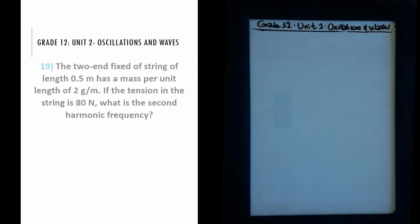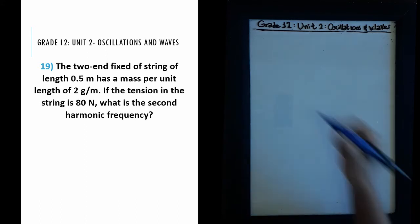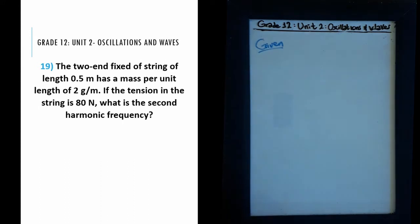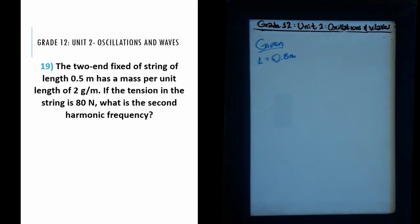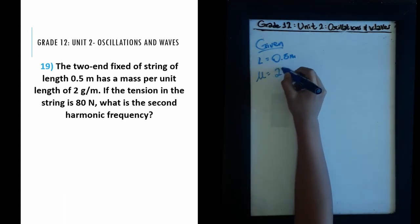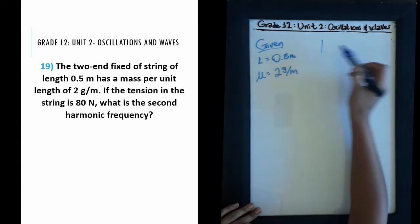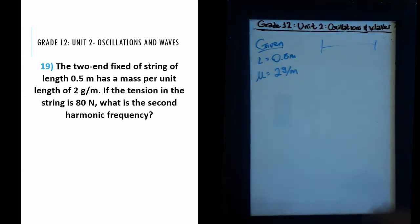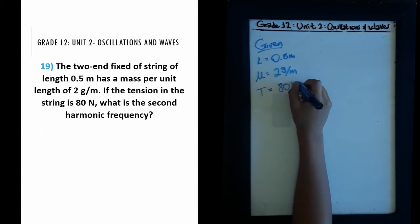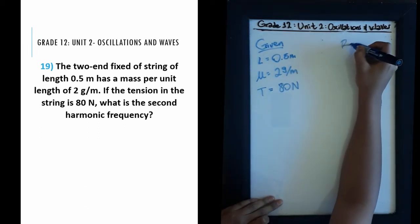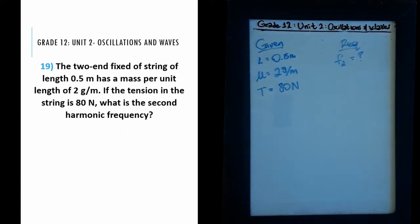Question 19: a two-end-fixed string of length 0.5 meters has a mass per unit length of 2 grams per meter. If the tension in the string is 80 newtons, what is the second harmonic frequency? We are given: length L = 0.5 m, mass per unit length μ = 2 g/m, and tension T = 80 N. We need to find the second harmonic frequency f₂.